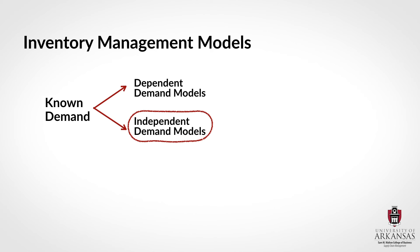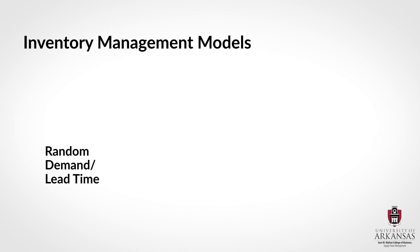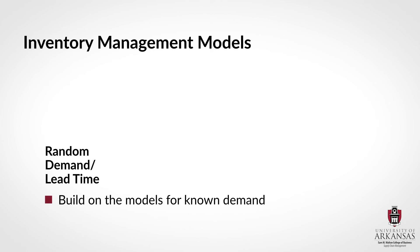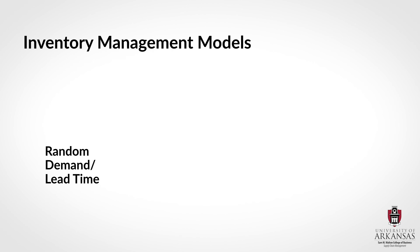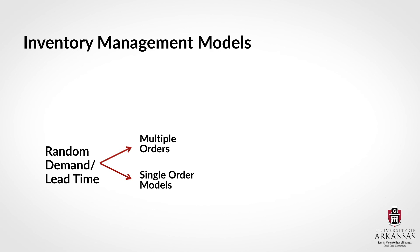Let me also provide a brief overview of the second group of inventory models — those for random demand and lead times. As mentioned, these models build on the simpler models for known demand such as the EOQ, but they are more powerful and relevant in practice because they allow us to make inventory decisions in light of uncertainty. Within this group we will distinguish between multiple order models and single order models, and in other lectures we will talk more about their differences, how they work, and when they should be applied.